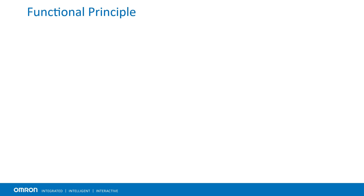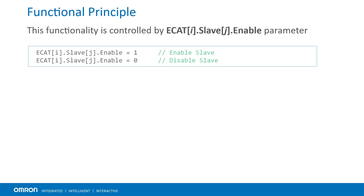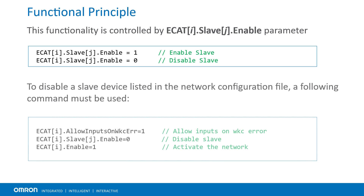Now let's see how the disable function works. The functionality is controlled by the ECAT slave.enable parameter. If it is set to 1, the device is enabled. If it is set to 0, the device is disabled from the active configuration. To disable a slave device, the following sequence of commands must be used.